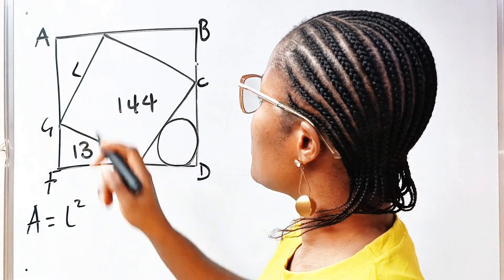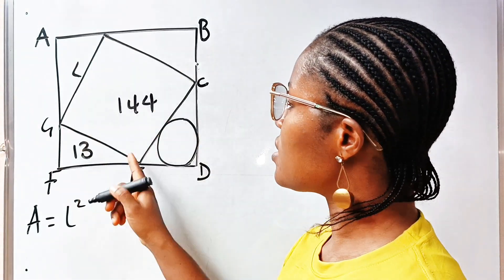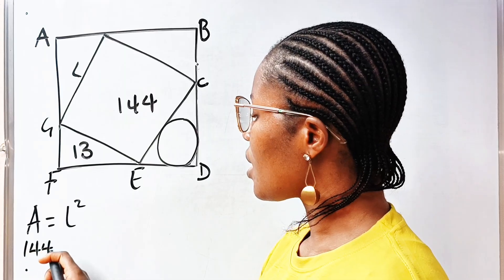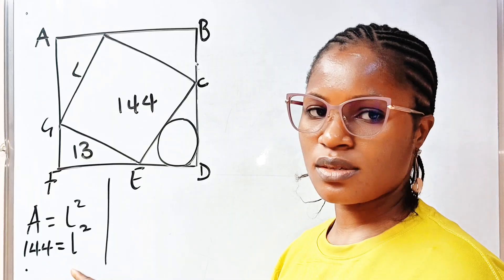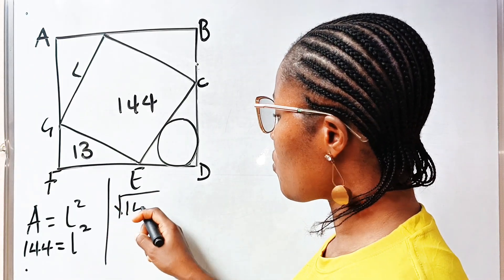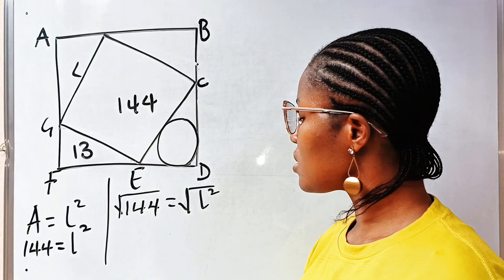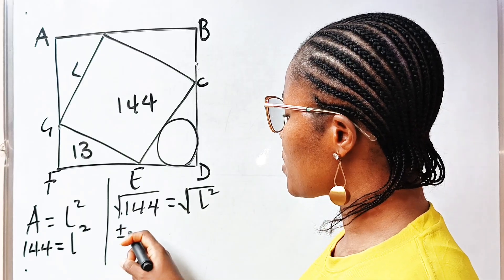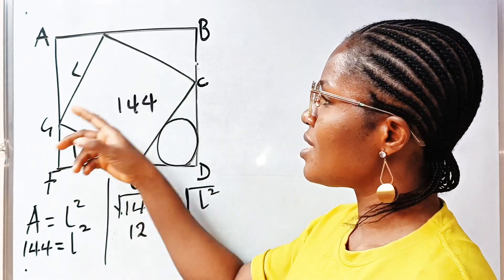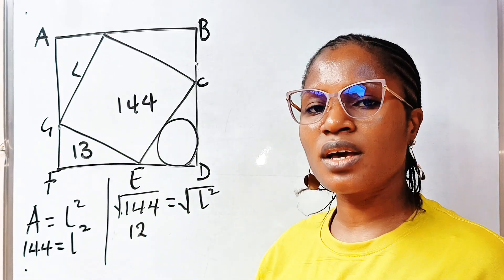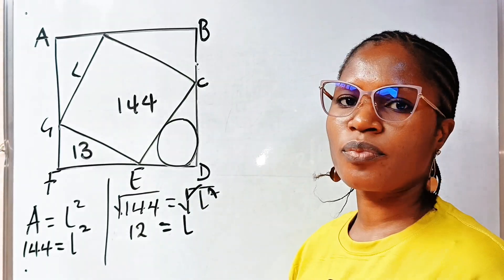So, if we call one part of this L, it means that the area of this is 144. We take the square root of both sides. We have square root of 144 is equal to square root of L squared. Square root of 144 is plus or minus 12, but we are going to take the positive 12, because the length is something that we can see — it cannot be negative. So, the length should be a positive number, meaning L is 12.